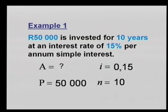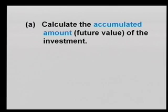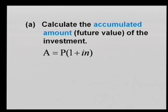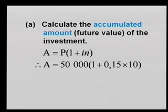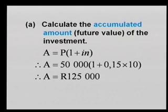What don't we know? We need A, which is the future value. The first question: calculate the accumulated amount or future value of this investment. There's the formula — you know the formula, we apply it. Substitution: P is 50,000. We put I and N into the formula, and the result is one hundred and twenty-five thousand Rand.